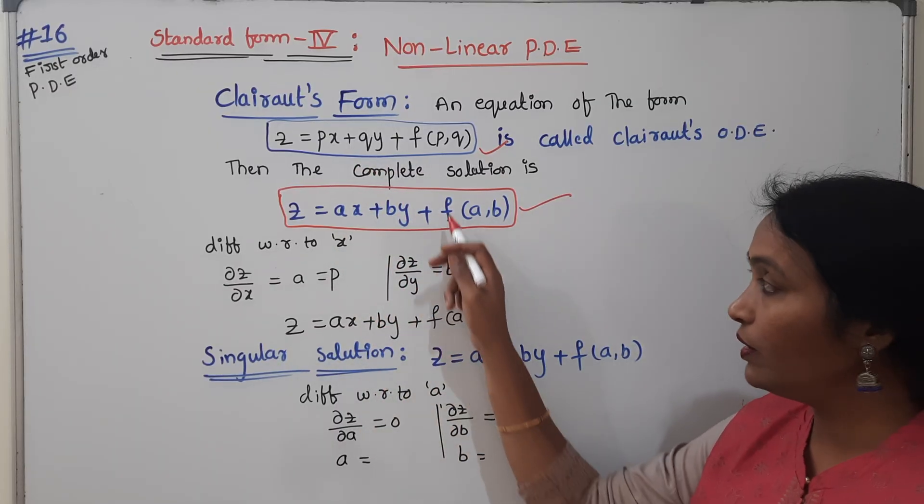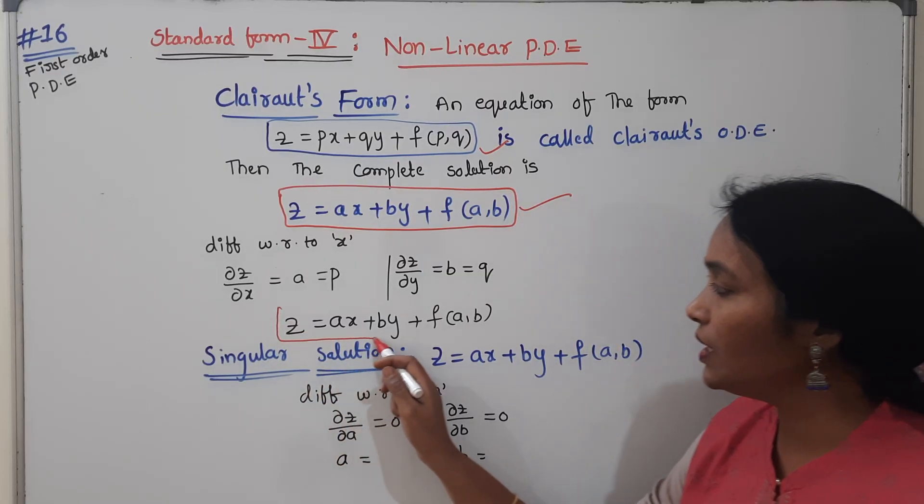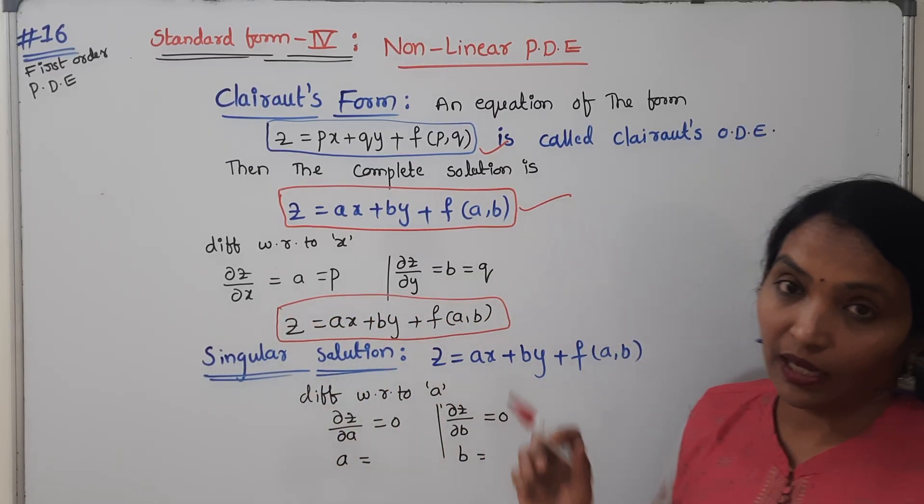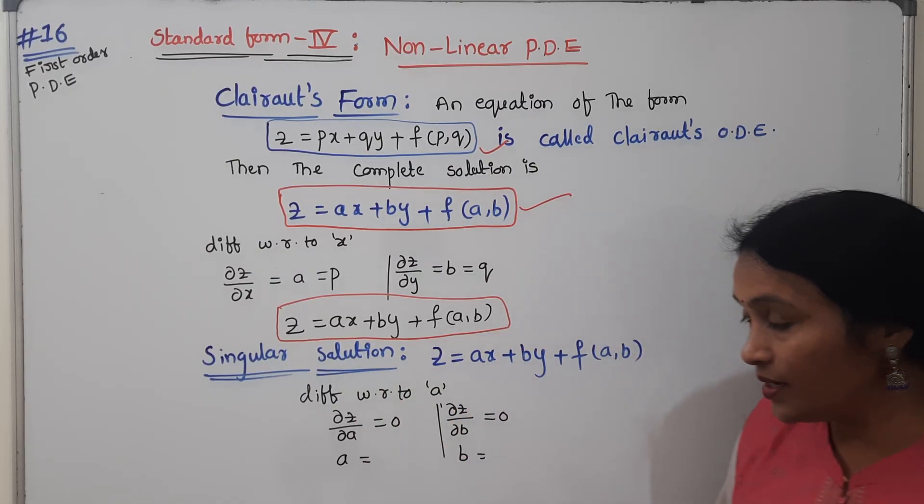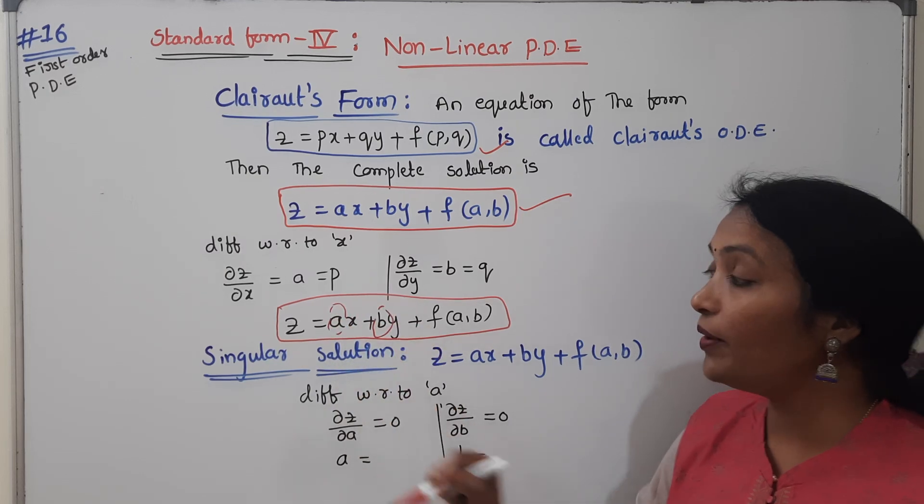Differentiate Z partially with respect to X, you will get A, considered it as P. Differentiate with respect to Y, you will get B, considered it as Q. Then we have the equation in terms of A and B, which is the complete solution.